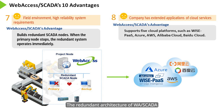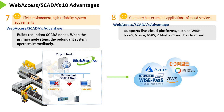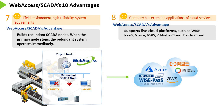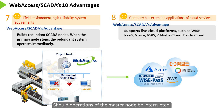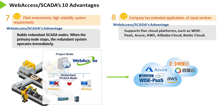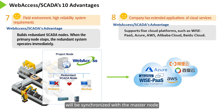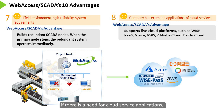The seventh advantage addresses sites that demand highly reliable operation and cannot afford equipment downtime. The redundant architecture of Web Access SCADA can be adapted to build redundancy into the SCADA nodes. Should operations of the master node be interrupted, the redundant backup nodes will go online immediately to continue working. When the master node resumes operation, the data that was collected by the redundant nodes will be synchronized with the master node and no data will be lost.